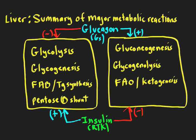Triglyceride synthesis is a little tricky, because in the liver its rate of synthesis depends on fatty acid flux. So if we have a lot of fatty acids entering the liver during fasting, we might actually be making some triglycerides and shipping them back out as well. In the well-fed state, we get the exact opposite: lots of insulin, toning down fasting reactions, and turning on glycolysis, glycogen synthesis, fatty acid synthesis, triglyceride synthesis, and the pentose phosphate shunt.